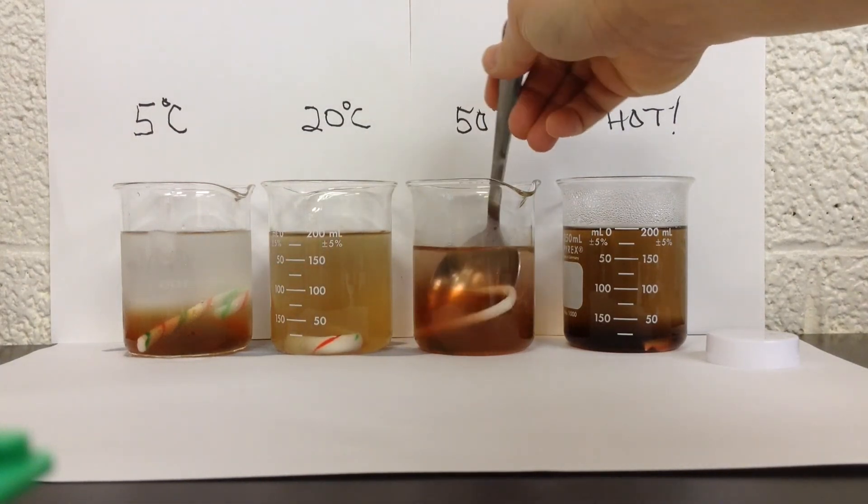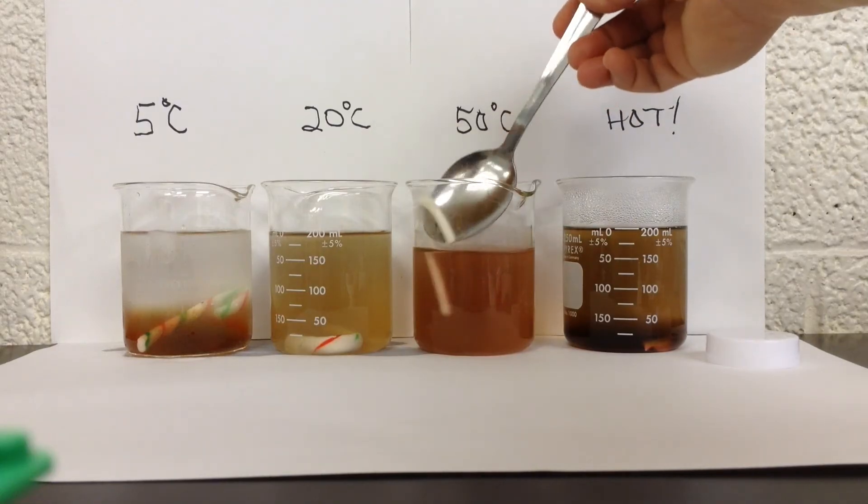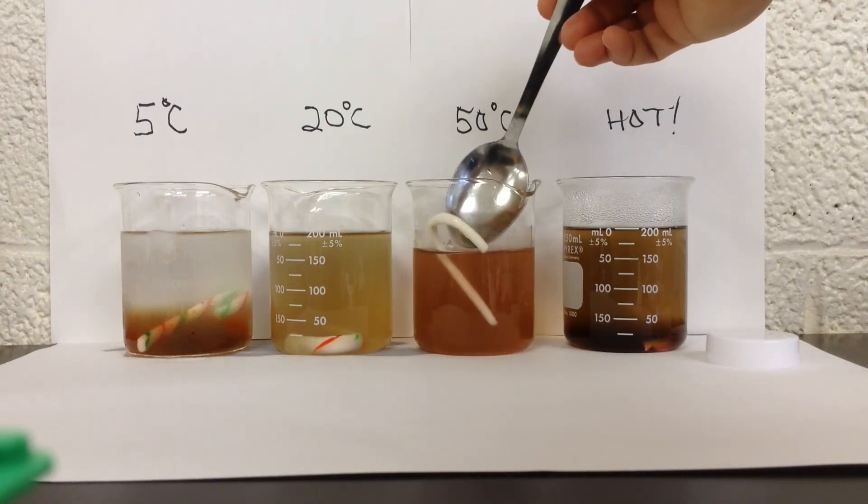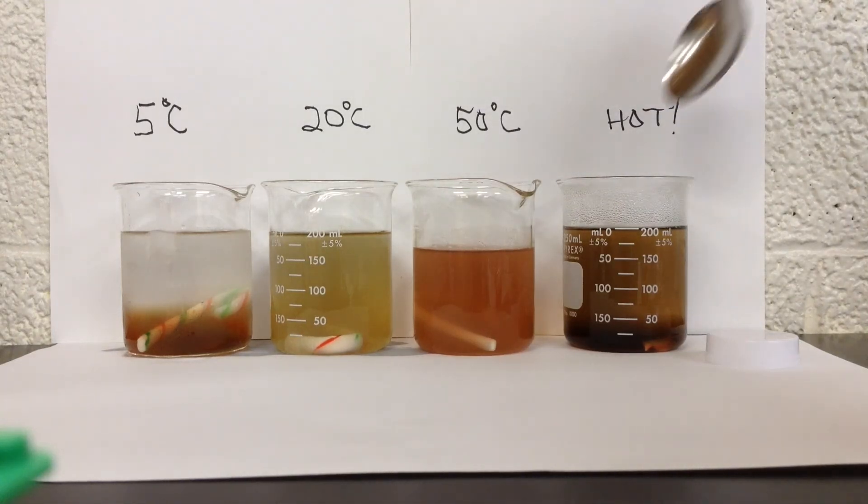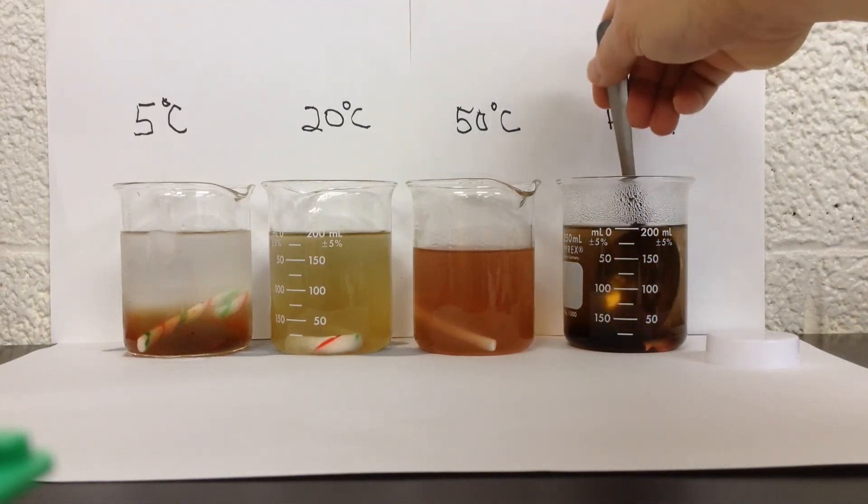Our hot tap water, we can see the candy cane is noticeably smaller. So quite a bit more has dissolved off the sides. And then our hot water from the kettle.